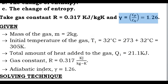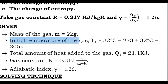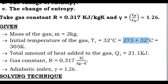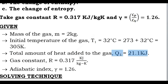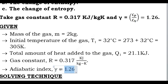Now I will list out the given conditions. Mass of the gas M = 2 kg. Initial temperature T1 = 32°C. For calculation purposes we represent temperature in Kelvin: 273 + 32 = 305 K. Total heat added Q = 21.1 kilojoules. Gas constant R = 0.317 kJ/kg·K. Adiabatic index gamma = 1.26.